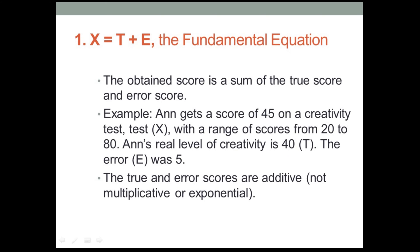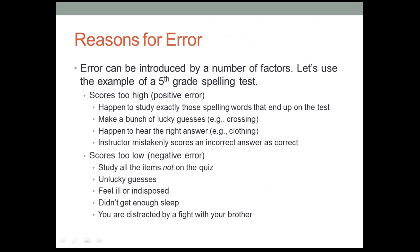Now, I'll give some reasons for why those error scores can be positive or negative in a moment. But first, before we move on, let's also notice that that T and that E, they're just added together. They're not multiplied. There are no exponents there. It's a pretty simple model. They're just added together. True scores and errors are added in this classical test score, classical true score or classical test theory, same thing.